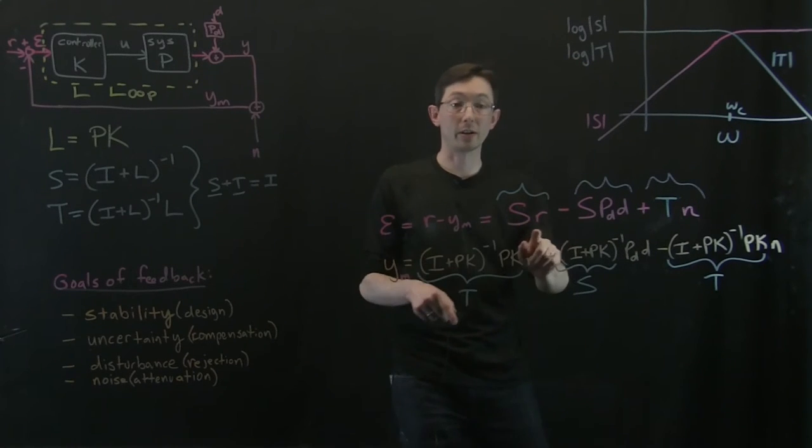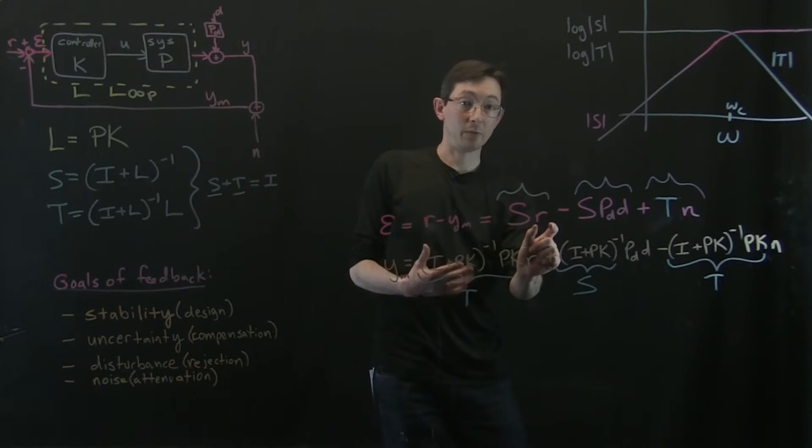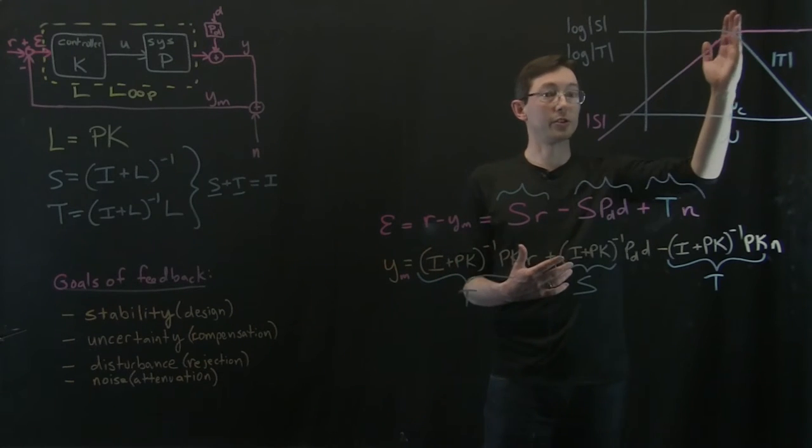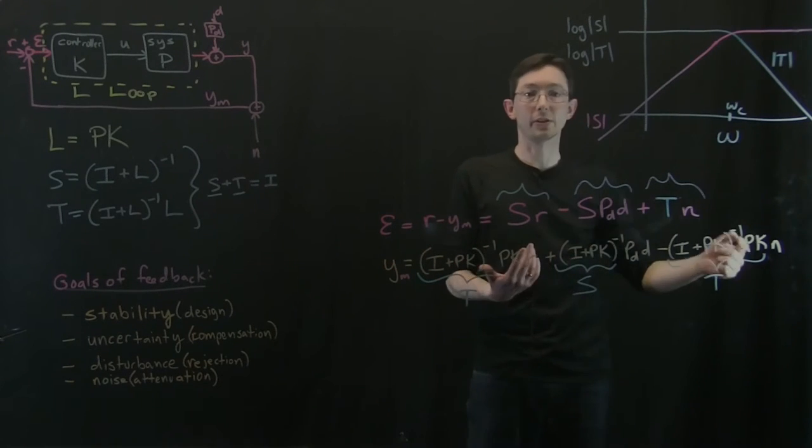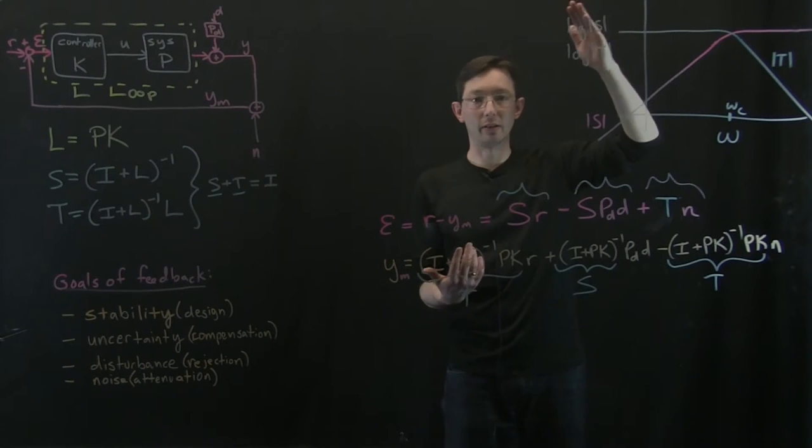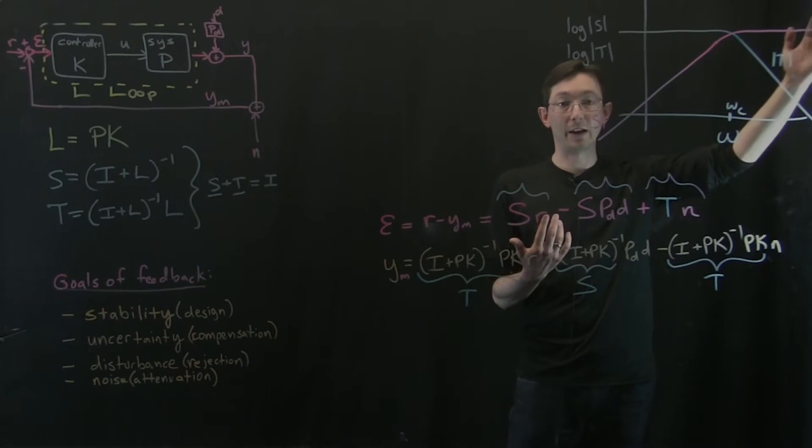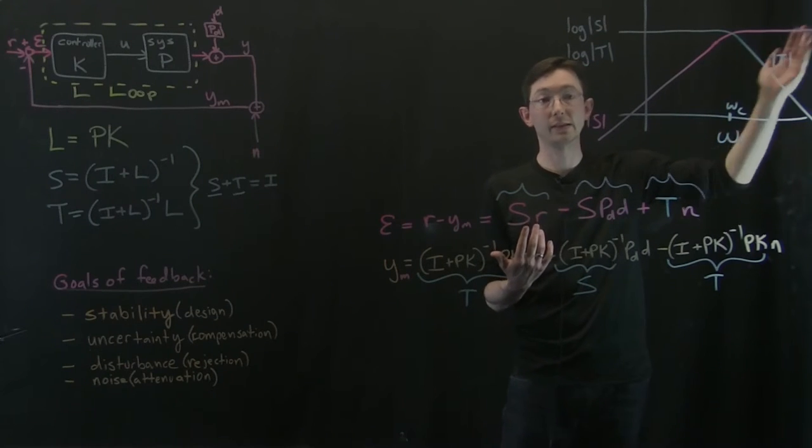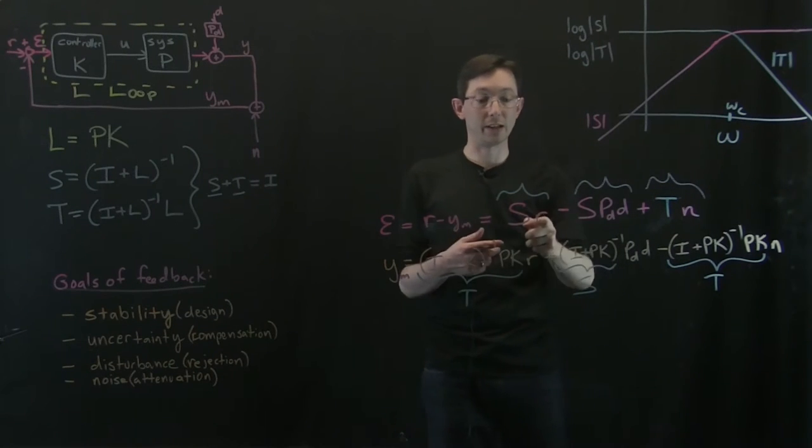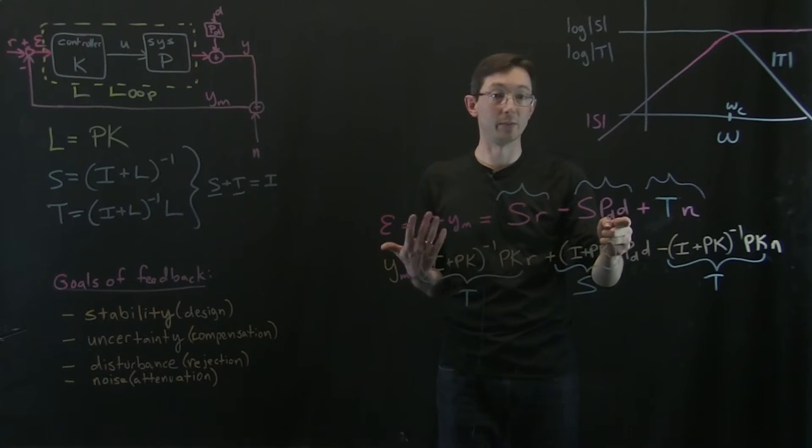So I can't have arbitrarily high bandwidth reference tracking and disturbance rejection and also have arbitrarily low frequency noise rejection. So there's some cutoff where above the bandwidth, I'm trying to attenuate noise. Below that point, I'm trying to have good reference tracking and disturbance rejection.